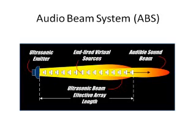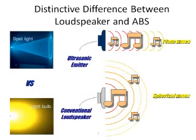Audible sound can be generated from ultrasound by modified amplitude modulation of the audio messages with an ultrasonic carrier. Audible sound is self-demodulated in air as a byproduct of the nonlinear interaction of ultrasound with air. Due to the high directivity or short wavelength of the ultrasound wave, it is able to carry the audible sound in a narrow beam just like a beam of light. A comparison between an audio beam and a conventional loudspeaker is shown.